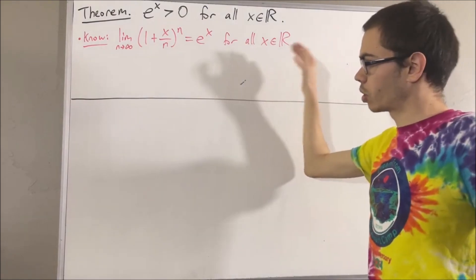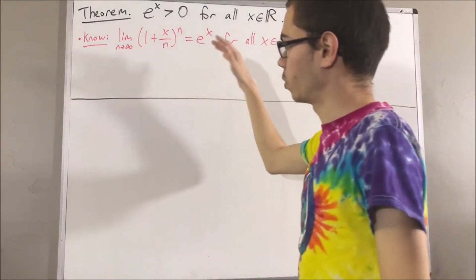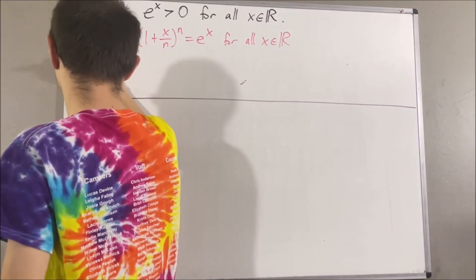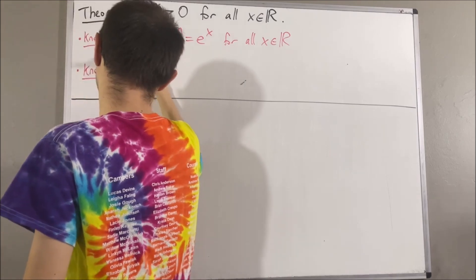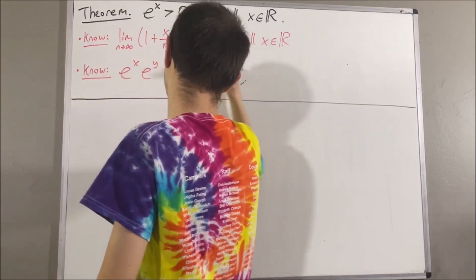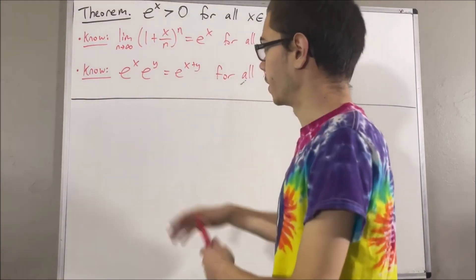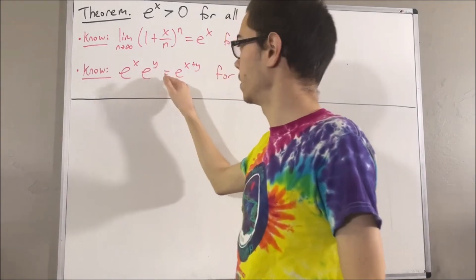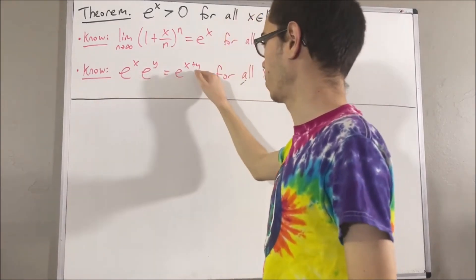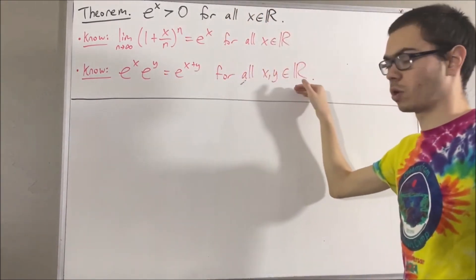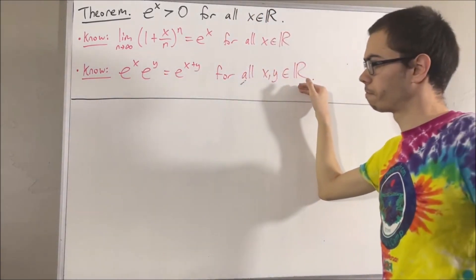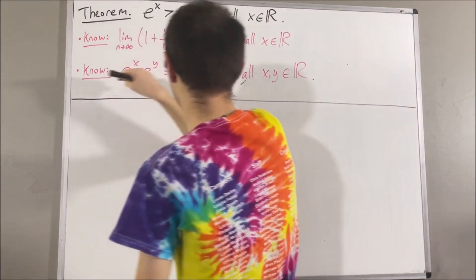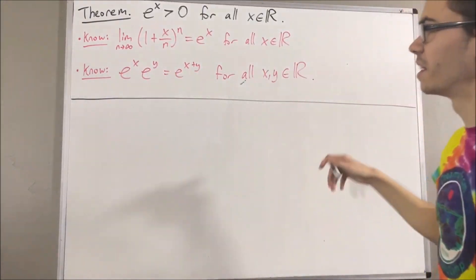We are going to use the following preliminary result in our proof: e to the x times e to the y is equal to e to the x plus y, for all real numbers x and y. This result is essentially going to do all the heavy lifting for us.